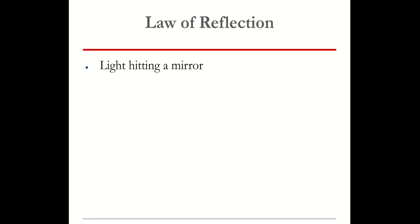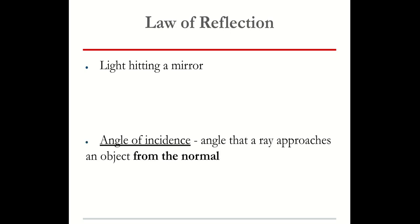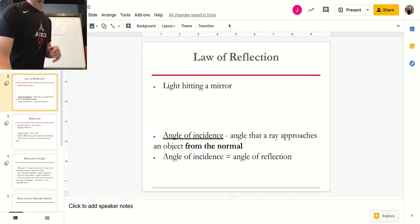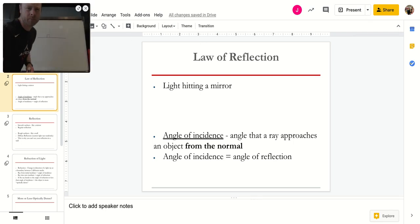So when light hits a mirror, we don't have enough time to talk about the images that you see and why some mirrors make your image bigger and some mirrors make an image smaller. We're just going to look at what happens when light hits a mirror. So I'm going to draw this after I explain what we call the angle of incidence. This is going to be a concept that will work for reflection and what we'll see is refraction. The angle of incidence is the angle that a ray approaches an object from the normal.